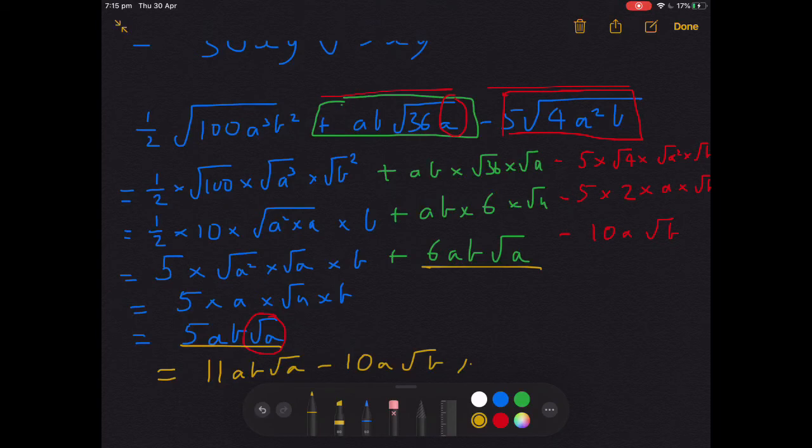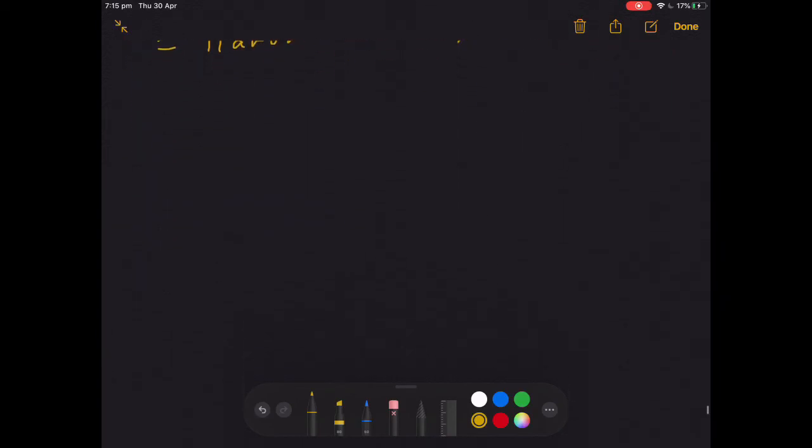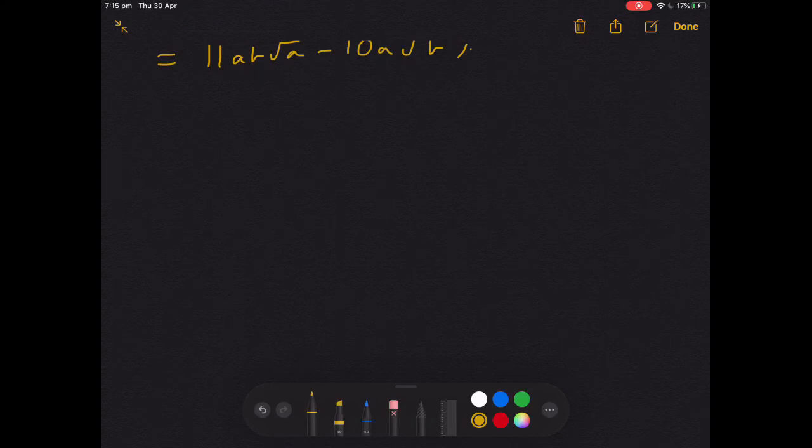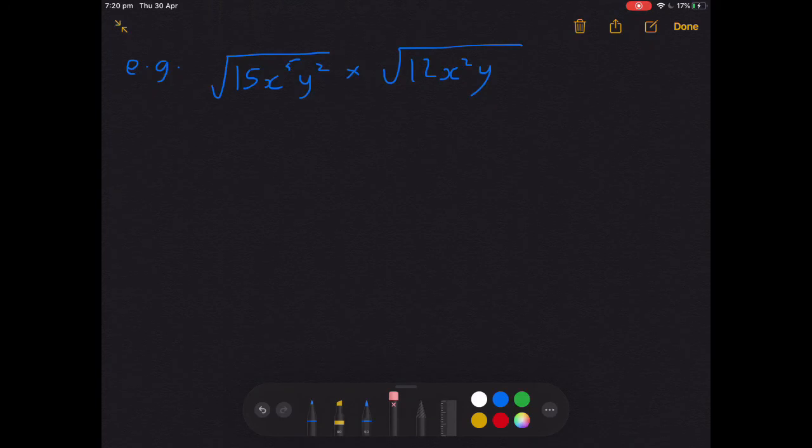One more that I want to go through, and it looks like this. It's to do with multiplication of roots. It's worked example 6d. Root 15x to the fifth y squared times root 12x squared y. These start easily enough. What we need to do is combine the two under the square root sign.